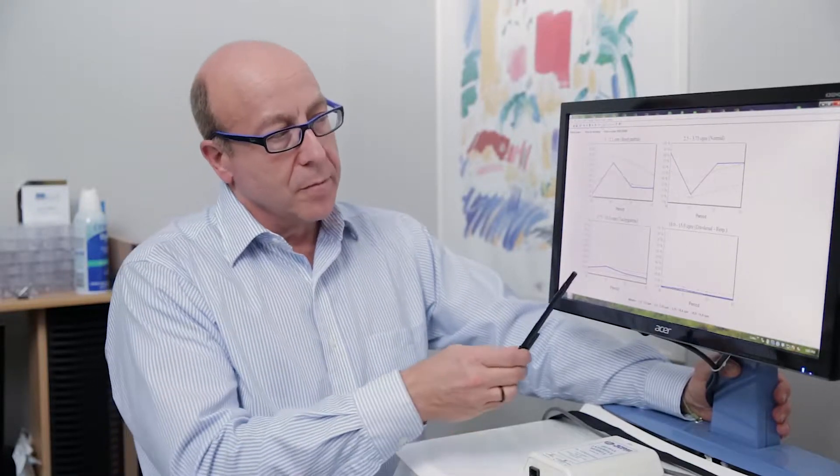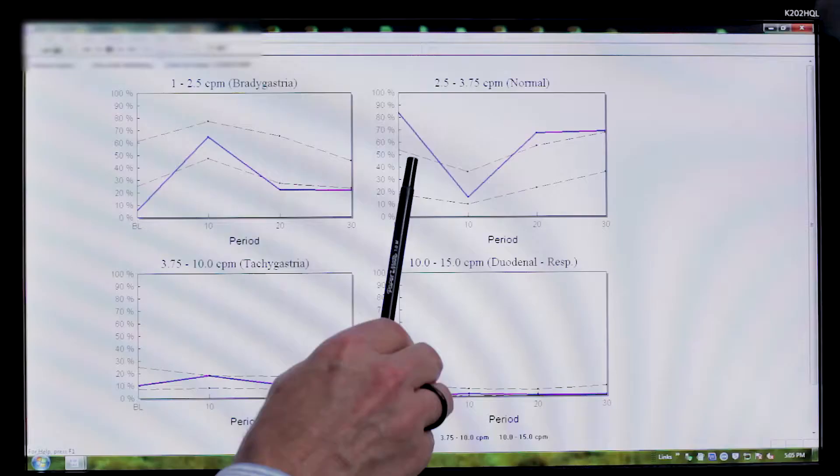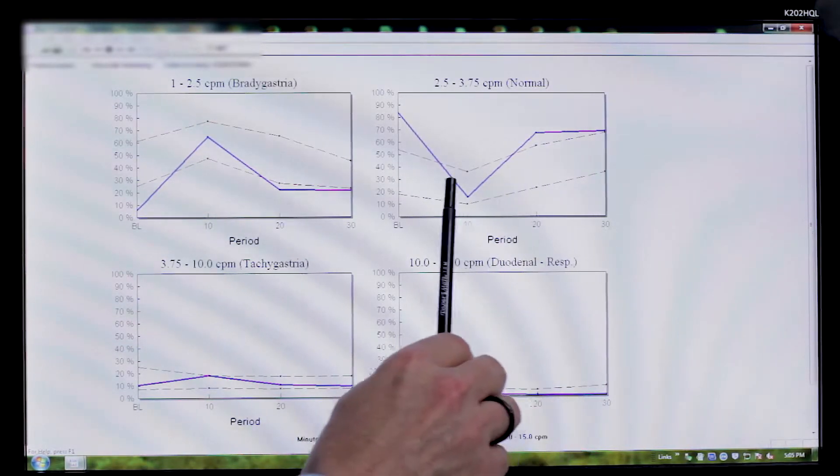When we look at this study, the thing that's remarkable, and the most important thing that I look at first, is the three-cycle-per-minute or normal box. Why is that? Because the studies have shown, biopsy studies have shown, that normal three-cycle-per-minute activity that is within these broken lines is indicative of adequate numbers of ICCs, or interstitial cells of Cajal, of a minimum of five per high power field, which means that the conduction apparatus between the nerve cells and the muscle cells is intact. So that's very important.